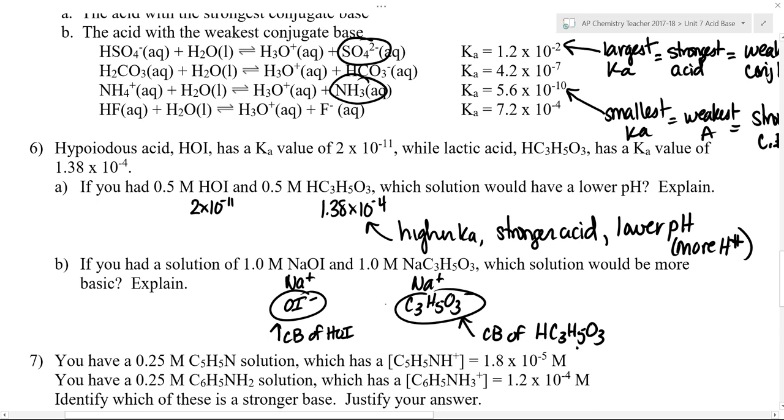So since the question is which solution would be more basic, the one with the weaker conjugate acid will have the stronger conjugate base. So this solution is going to be the most basic because HOI is a weaker acid than lactic acid. Therefore, its conjugate base, OI minus, will be the stronger base. And if you want, you could do a calculation.